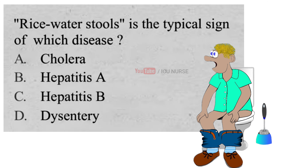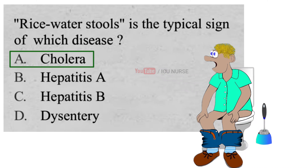Rice water stools is a typical sign of which disease? A. Cholera, B. Hepatitis A, C. Hepatitis B, D. Dysentery. And the correct answer is A. Cholera. The characteristic cholera stool is an opaque white liquid that is often described as having a rice water appearance in color and consistency. It resembles water that has been used to wash or cook rice.